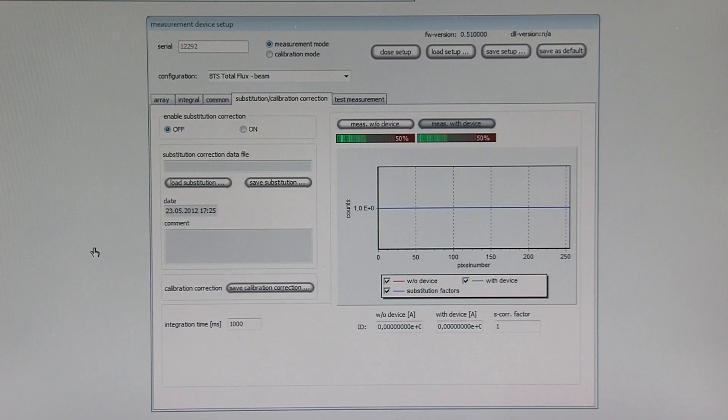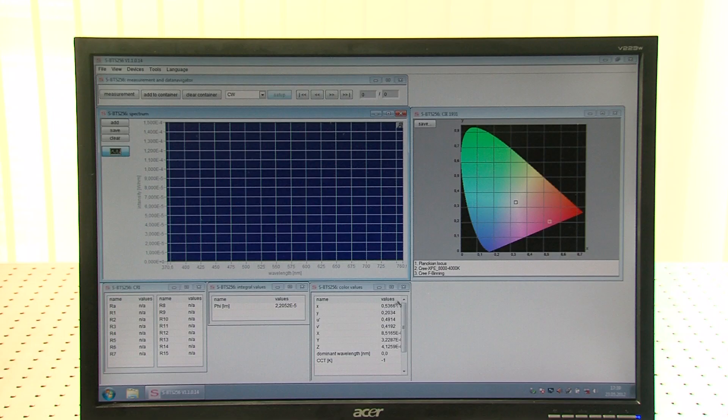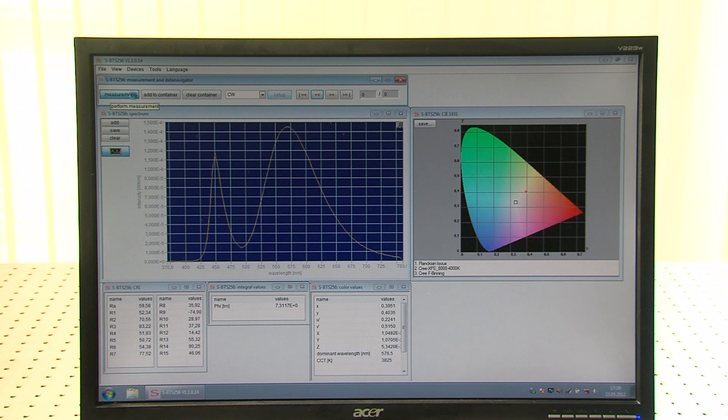The software provides a routine for correction of self-absorption errors using the auxiliary lamp of the BTS256 LED Tester. In continuous mode, measurements are repeated and updated. Measured values are displayed in the appropriate windows on the desktop based on the settings.